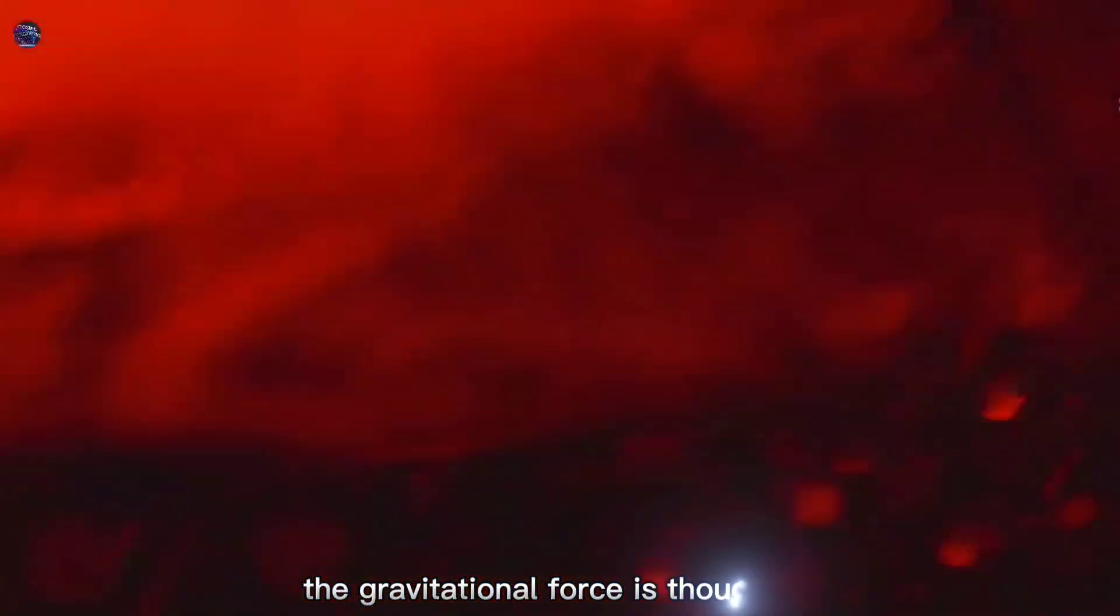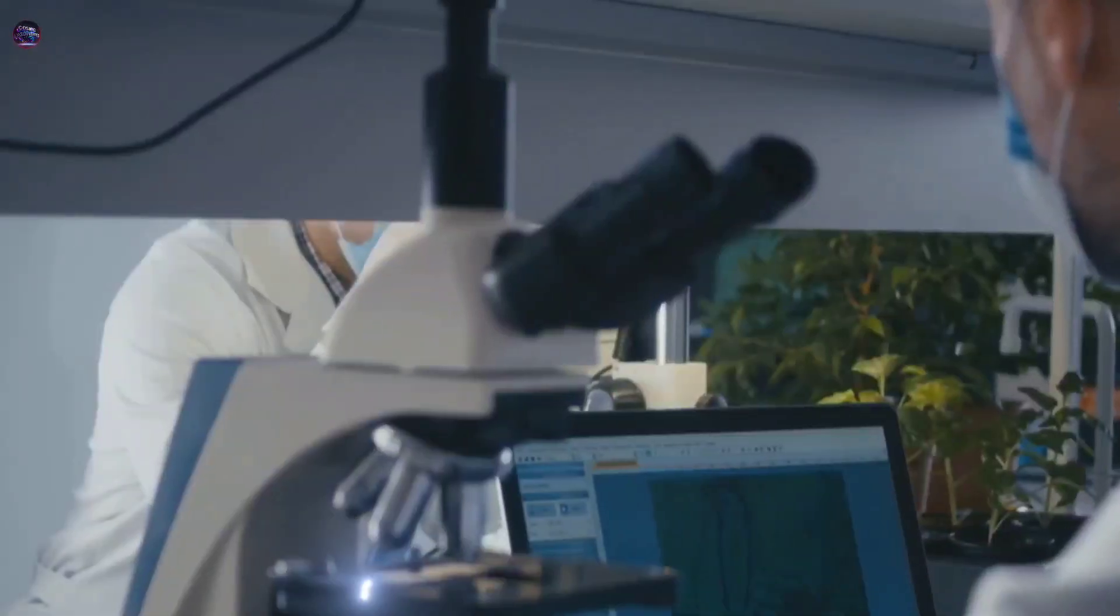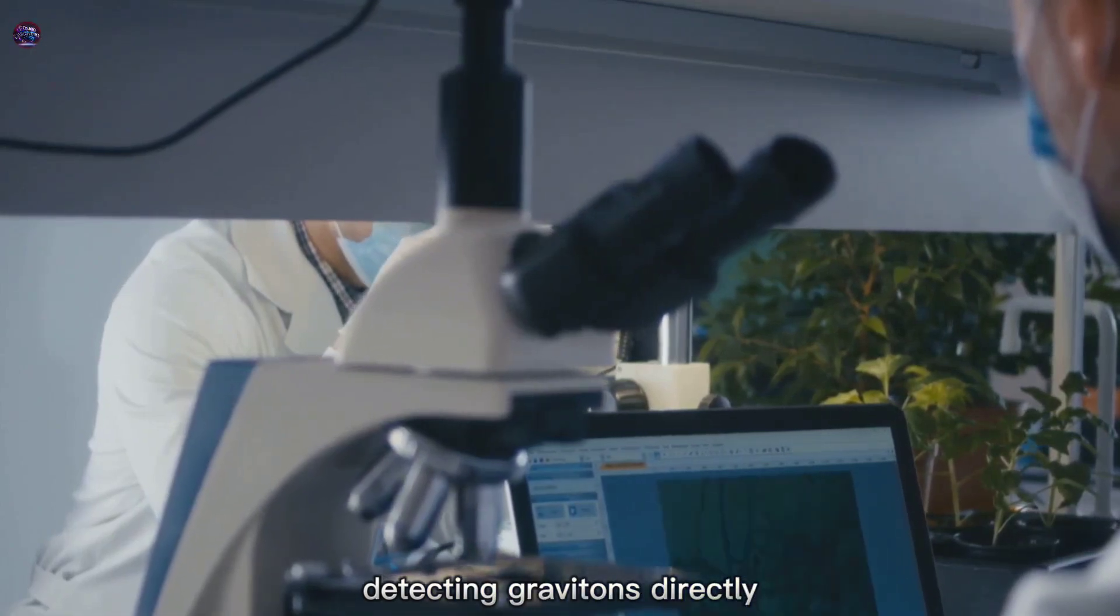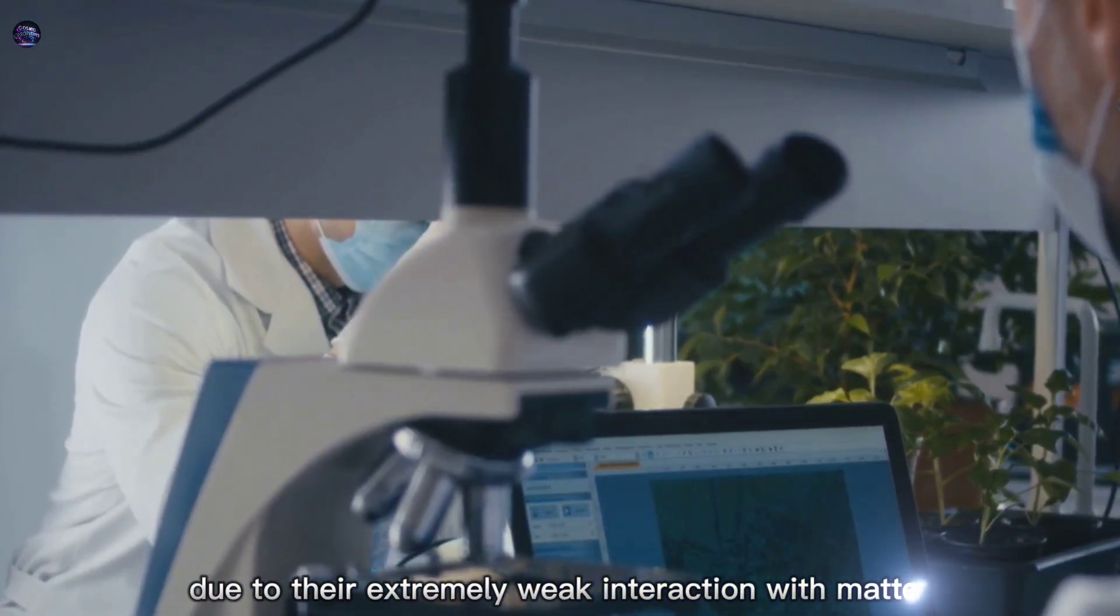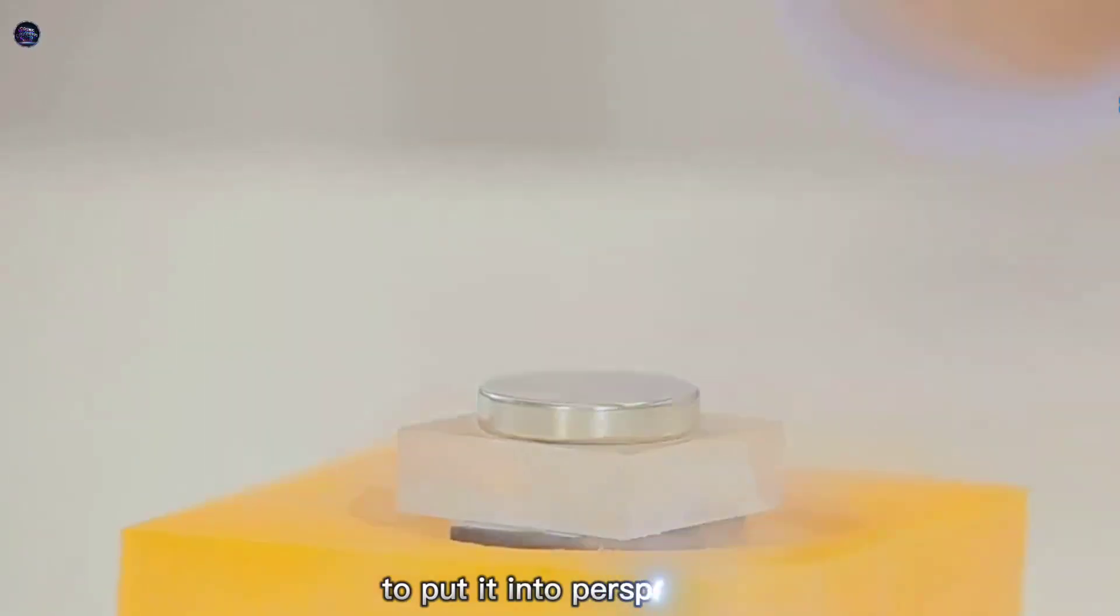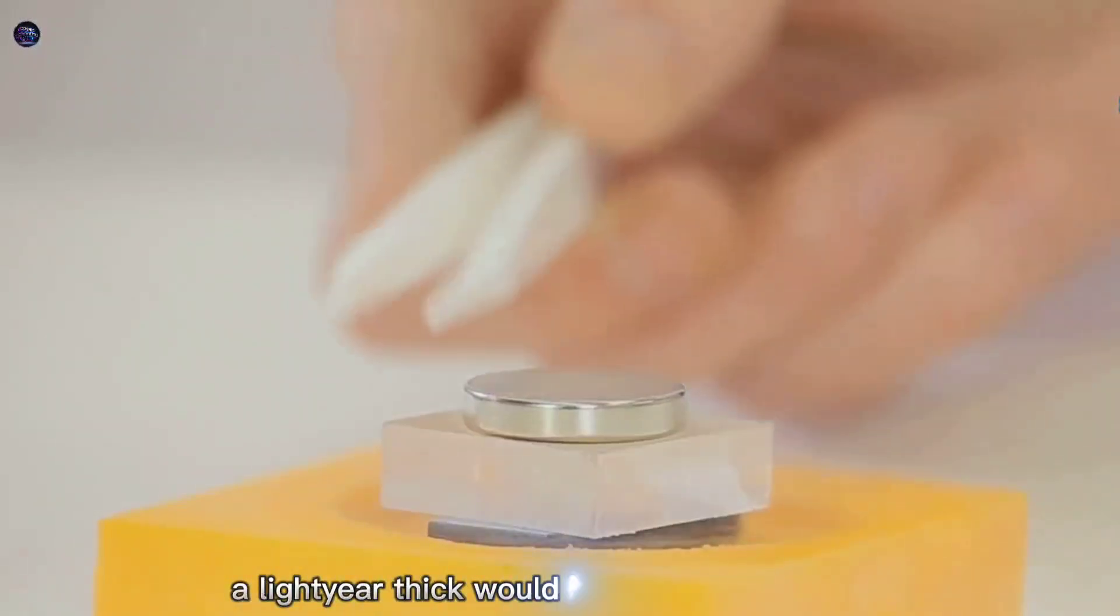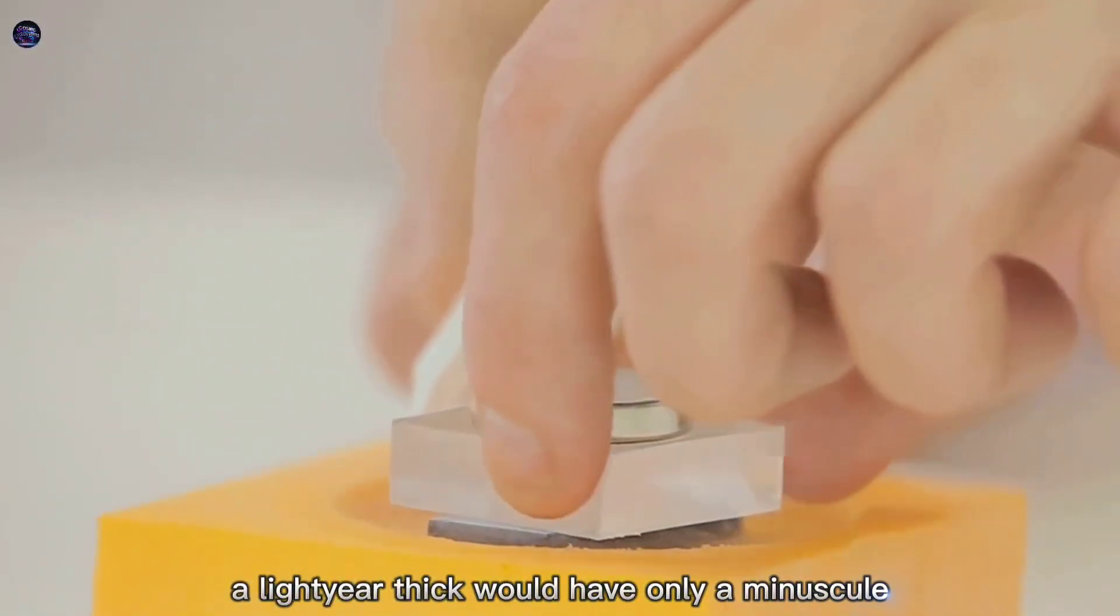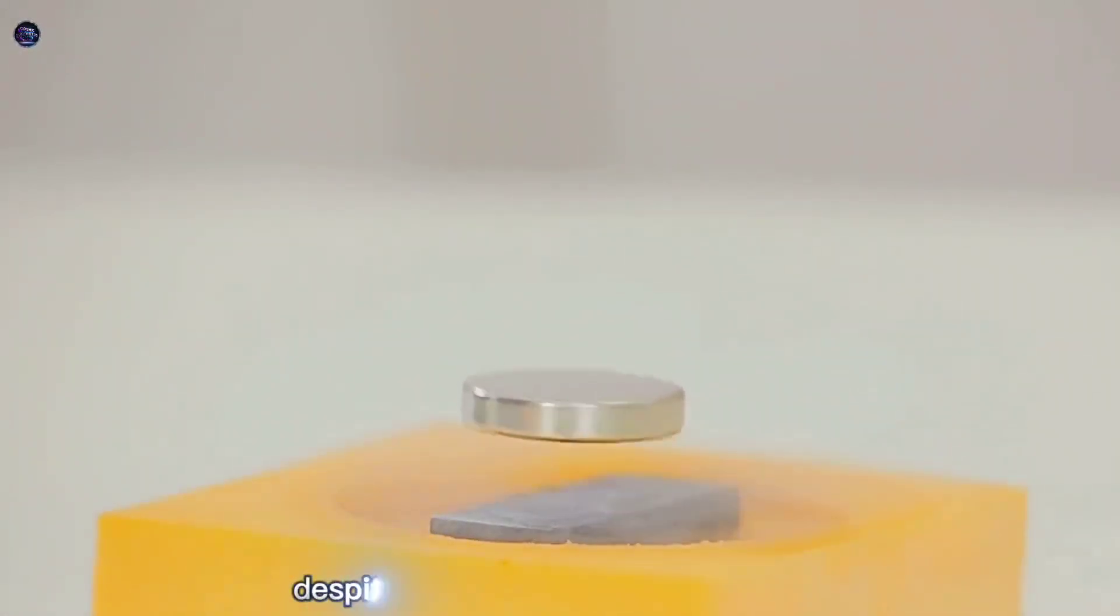However, detecting gravitons directly would be incredibly challenging due to their extremely weak interaction with matter. To put it into perspective, a graviton passing through a block of lead a light year thick would have only a miniscule chance of interacting with a single atom within it.